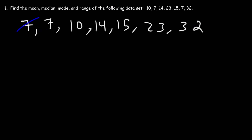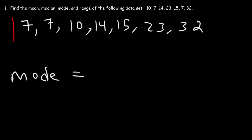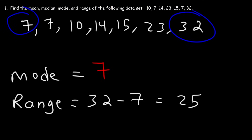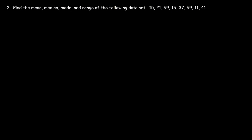Now what about the mode? The mode is simply the most frequently occurring number in the data set. Notice that 7 appears twice, so 7 is the mode. Now what about the range? The range is simply the difference between the highest number and the lowest number, so it's 32 minus 7, which is 25. Now you know how to find the mean, median, mode, and range of a data set.